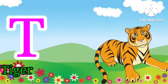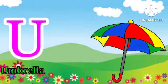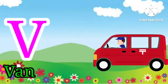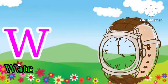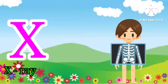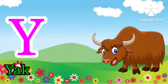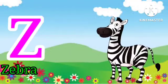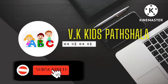T for tiger. U for umbrella. V for van. W for watch. X for x-ray. Y for young. Z for zebra.